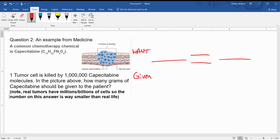On the right side of that equal sign, we usually use things from the periodic table or the idea that one mole is 6.02 times 10 to the 23rd. Let's look at what the question wants. A common chemotherapy chemical is that thing right there. One tumor cell is killed by one million of those molecules in the picture above. Here's my question: how many grams should be given to the patient? So that's going to be my x, and I'm going to put in parentheses what units I have. We're looking for how many grams of what? Grams of our molecule.